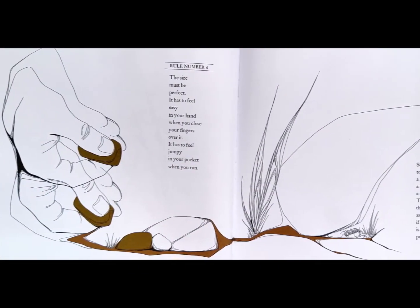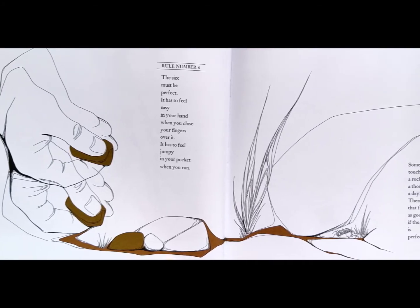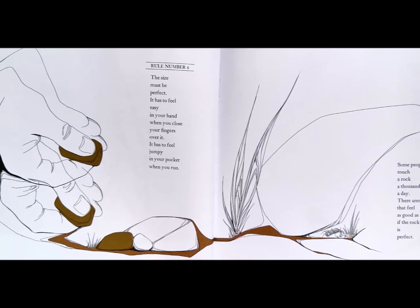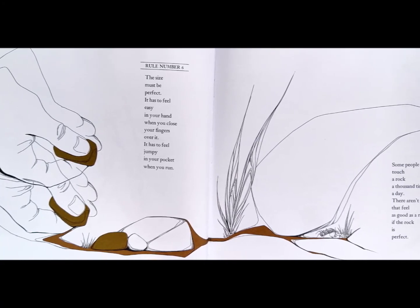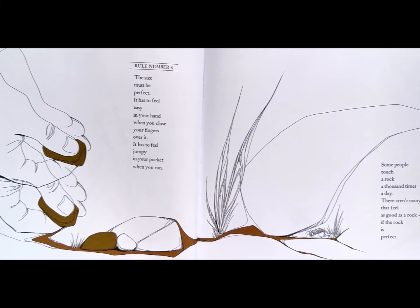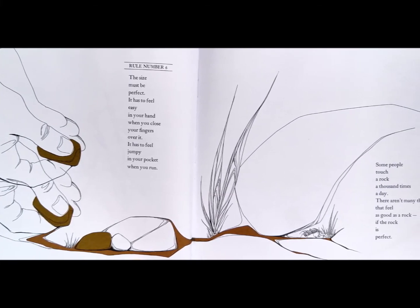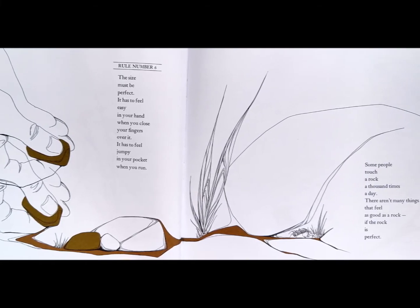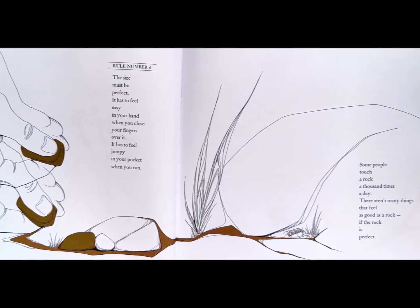Rule number six. The size must be perfect. It has to feel easy in your hand when you close your fingers over it. It has to feel jumpy in your pocket when you run. Some people touch a rock a thousand times a day. There aren't many things that feel as good as a rock, if the rock is perfect.